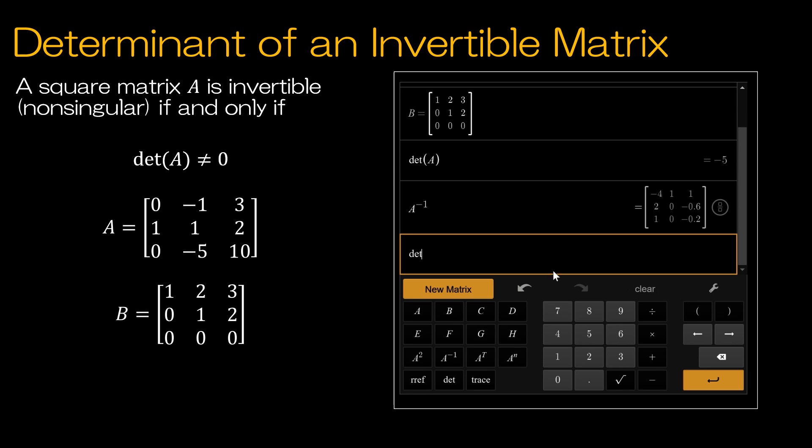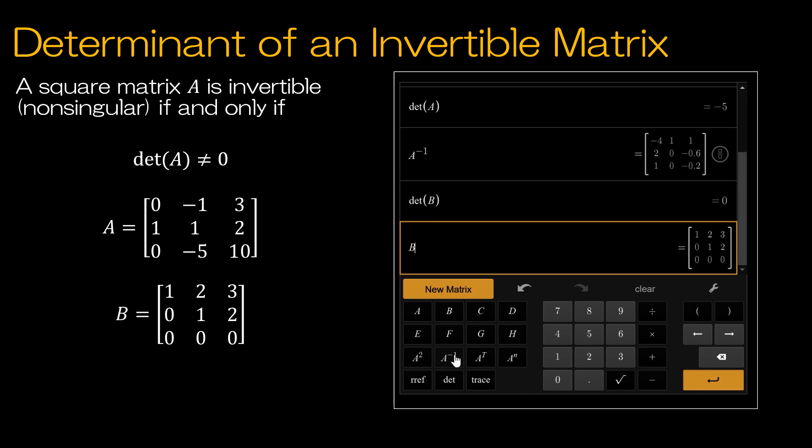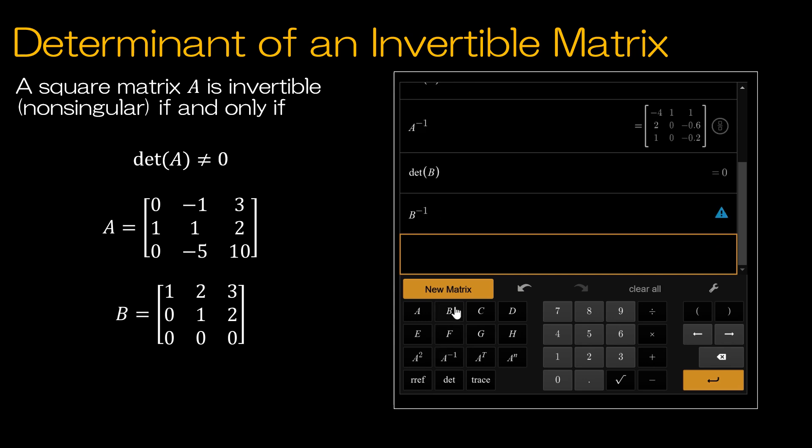Now let's take a look at B. Determinant of B, 0, which we should have been able to figure out because we have a whole row of zeros. But now notice if I take B inverse, I get an error. And the error is that singular matrices do not have an inverse.